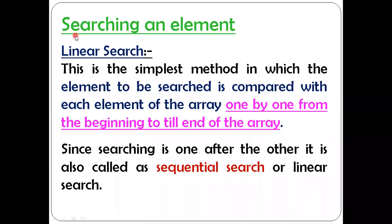Hello everyone. In this video we'll study about searching and types of searching. First of all, searching means finding the location of an element. There are two different types of searching methods: the first one is linear search and the second one is binary search. Here in this video we'll study about only linear search and its algorithm and working.